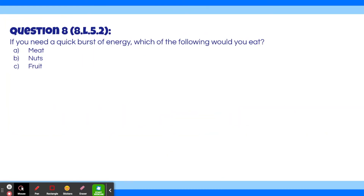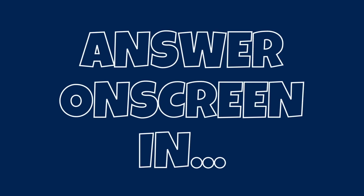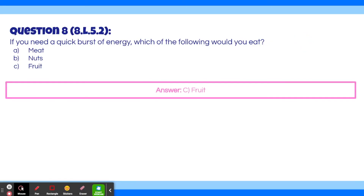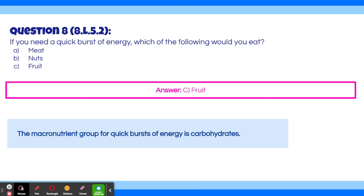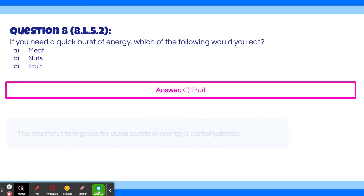Question 8: If you need a quick burst of energy, which of the following would you eat? A: meat, B: nuts, C: fruit. The answer is C, fruit. The macronutrient group for quick bursts of energy is carbohydrates. Meat is a protein, nuts contain lipids, and fruit is a carb. Fruits and vegetables are also better than other carbs such as bread for quick bursts of energy because they are simple carbs, which are easier for your body to break down and use.